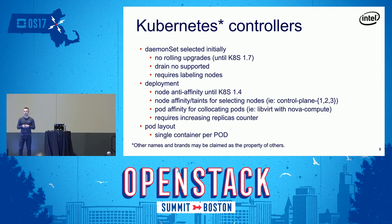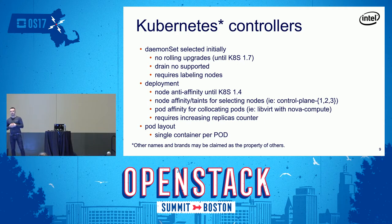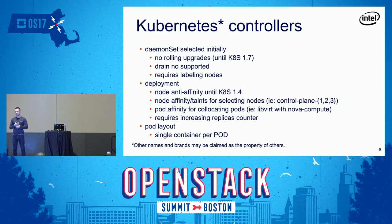DaemonSet also requires you to label machines if you want a specific pod deployed on them — assuming you want to limit which machines are used for the control plane versus hosting VMs. With Deployment, the case was slightly different. Deployments offered rolling upgrades from the very beginning. But until Kubernetes 1.4, it was not possible to ensure each pod of a controller was deployed on a separate machine.